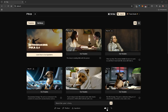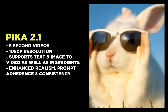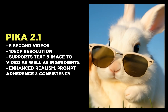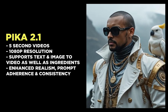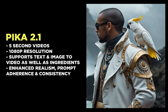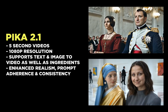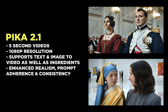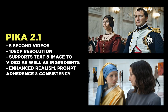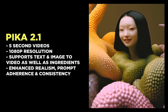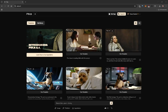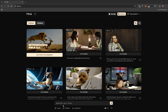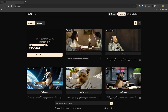By default, you should have the 2.1 model selected. With 2.1 we can generate five-second videos at 1080p resolution. We can do text to video, image to video, and ingredients. I'll be showing you ingredients later — it's a super amazing feature that allows multi-entity consistency. Let's start with text to video.